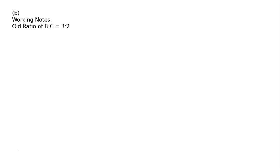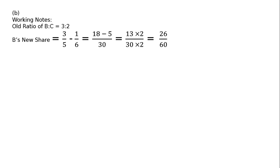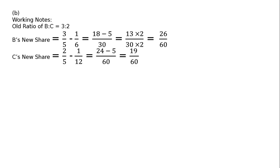Working notes: Old ratio of B to C is equal to 3 to 2. B's new share: 3 upon 5 minus 1 by 6 (share acquired by D from B), LCM 30, that is 18 minus 5, equal to 13 upon 30. Multiplied by 2 upon 2 to make denominator 60, that is 26 upon 60. C's new share: 2 upon 5 minus 1 upon 12, LCM 60, that is 24 minus 5, equal to 19 upon 60.